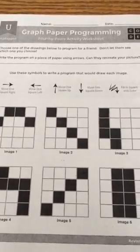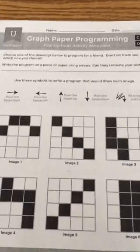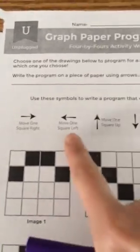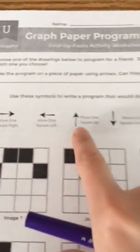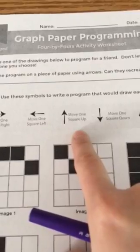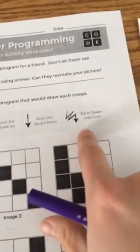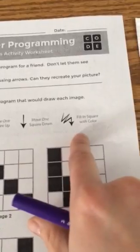We're going to be using these symbols, arrows, to indicate which direction our arm should move and when to fill in the blocks. The arrows indicate: move one square right, one square left, one square up, one square down, and this symbol is a squiggly arrow, means fill that square in with color.